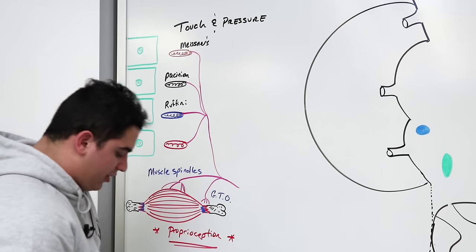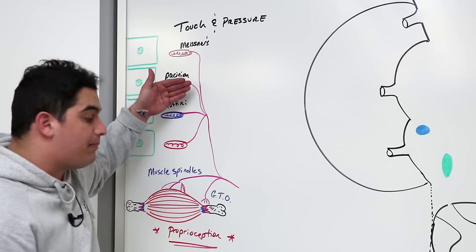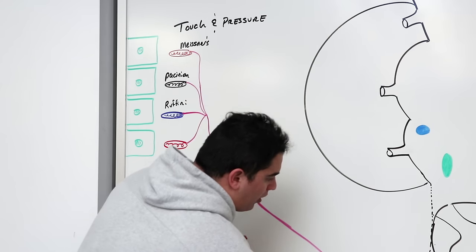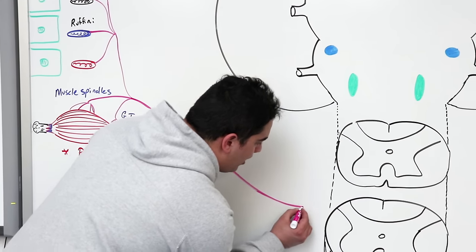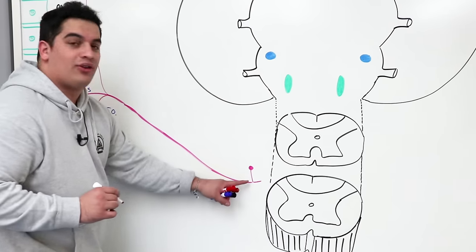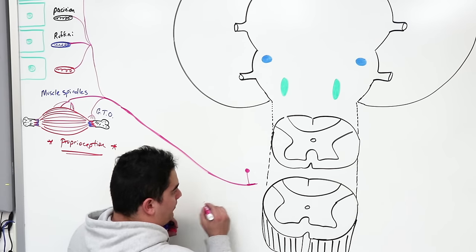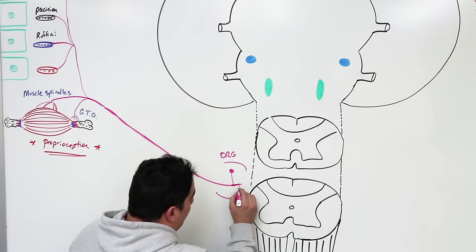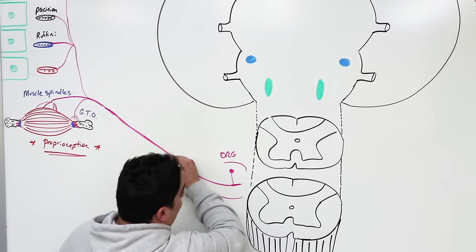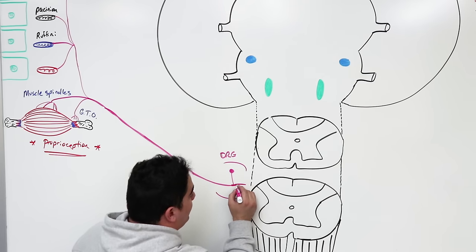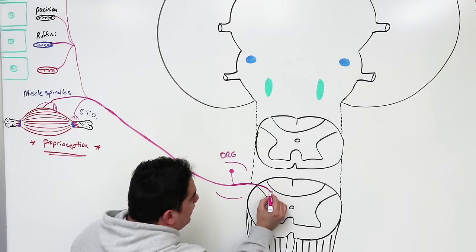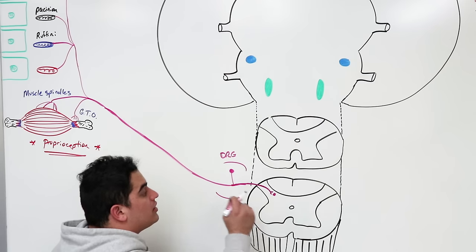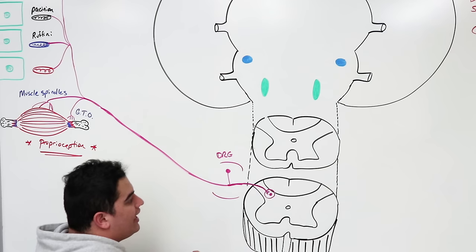Touch and pressure receptors include Meissner's corpuscles, Pacinian corpuscles, and Ruffini corpuscles. All this information — touch, pressure, and proprioception — goes into the spinal cord. Coming into the bottom of the spinal cord, you have the dorsal root ganglion, where the first-order neuron of the dorsal spinocerebellar tract pathway is located. The peripheral process picks up the signals and transmits them via the pseudounipolar neuron into the central process.